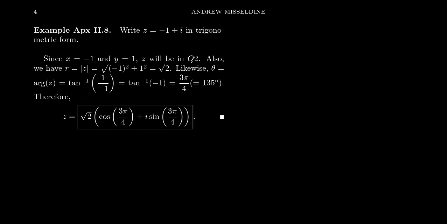Let us write the complex number z equals negative 1 plus i in its trigonometric form. It's given in the Cartesian form of the complex number. So we can very quickly see that the real part of z is negative 1 and the imaginary part of z is positive 1.